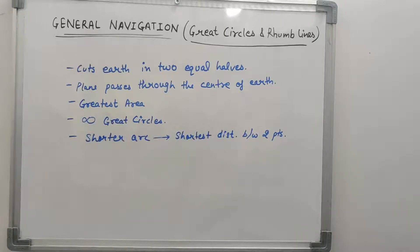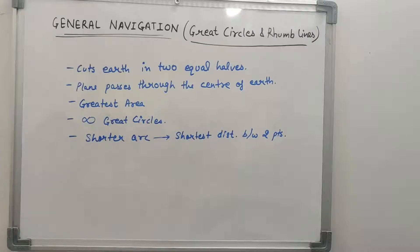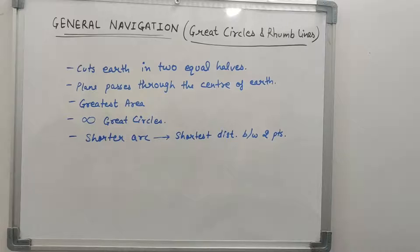Hello everyone, welcome back to my channel. In today's video we'll be learning about great circles and rhumb lines. In the previous video we learned that the great circle is the circle which cuts the Earth into equal halves and whose center and radius are those of the Earth itself. We discussed properties such as: the great circle cuts the Earth in two equal halves, its plane passes through the center of the Earth, it has the greatest area, we can draw infinite great circles on the surface of the Earth, and the shorter arc of a great circle is the shortest distance between any two points.